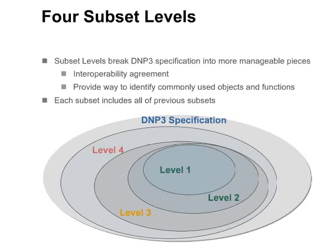The DNP-3 specification is very comprehensive. It would be impractical to try to implement every possibility described in the specification. Consequently, the DNP user group has adopted four subset levels. The subset levels break the specification into more manageable pieces. Each subset level represents an interoperability agreement between devices of the specified subset. Each subset defines a specific set of functionality that must be supported, and each subset includes all of the previous subsets.